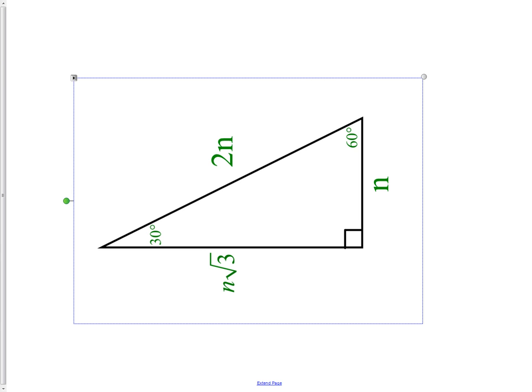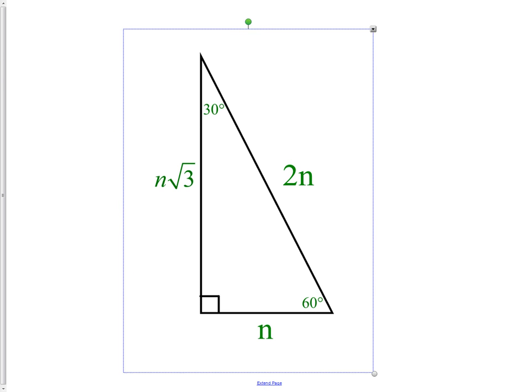Opposite the 60 will be the n root 3. And opposite the right angle or the hypotenuse will be your 2n side.